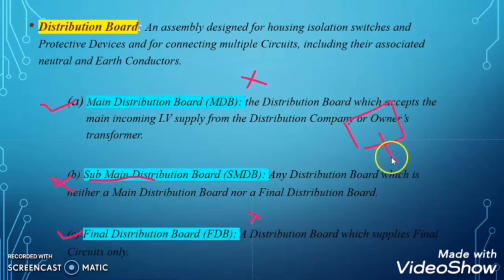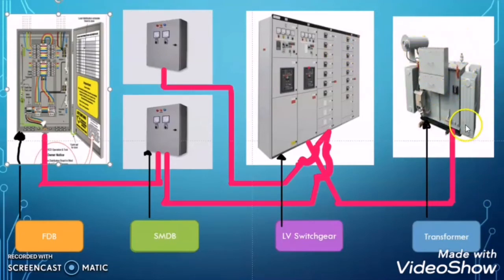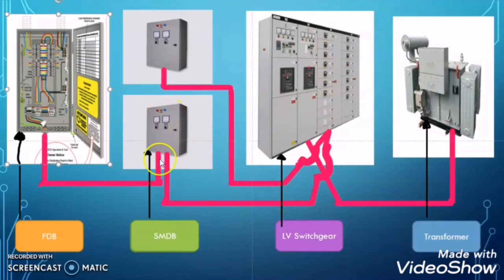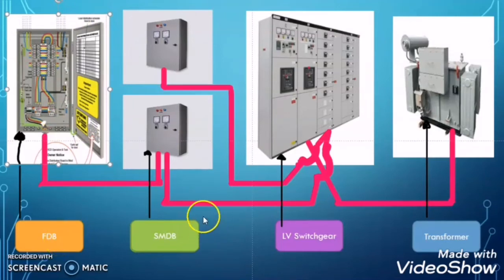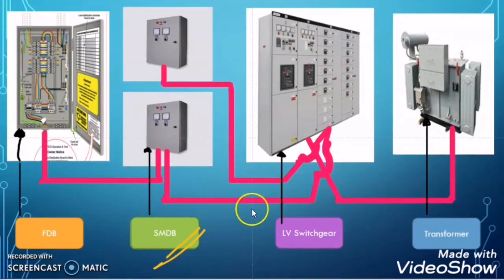The sub-main distribution board should not take power directly from the transformer and should not feed the final circuits. In our example, you can see there is a transformer which is directly feeding the main distribution board (MDB or LV switchgear). The outgoing of the MDB feeds the SMDB, and the SMDB feeds the FDB, which in turn feeds the final circuits directly supplying power to the loads. The sub-main distribution board is only the mediator between the MDB and the FDB.